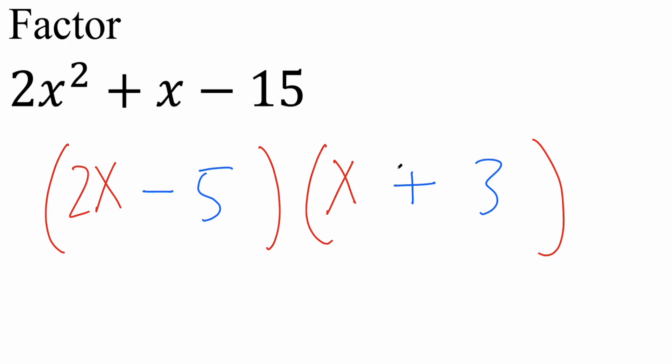And so this right here is our final answer. But if you want to further check, you can expand. So let's do that also. 2x times x would give us 2x squared. 2x times 3 would give us positive 6x. Negative 5 times x is negative 5x. And negative 5 times 3 is negative 15.